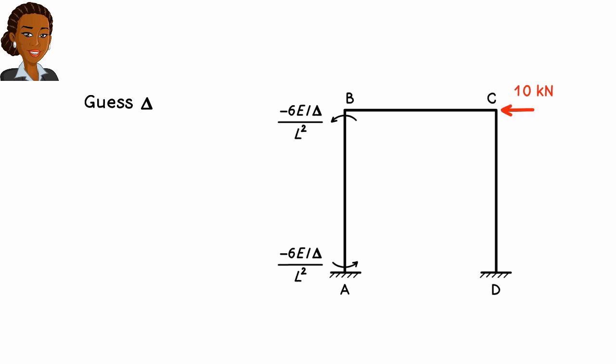Since we are guessing at this stage, we could pick a value for delta that would give us a round number for the fixed end moments, like negative 10 kN-m. And since we are not going to use delta beyond this point, its value is not really needed here. All we need to know is that there exists a value for delta such that when used in these equations, we get negative 10 for the fixed end moments.